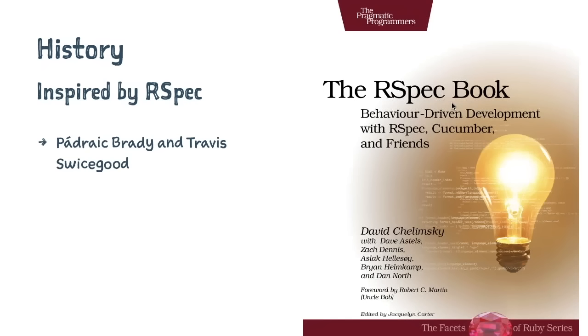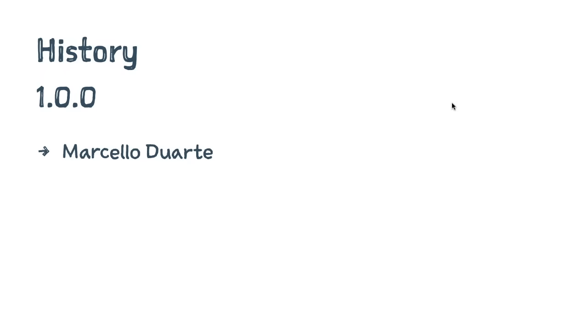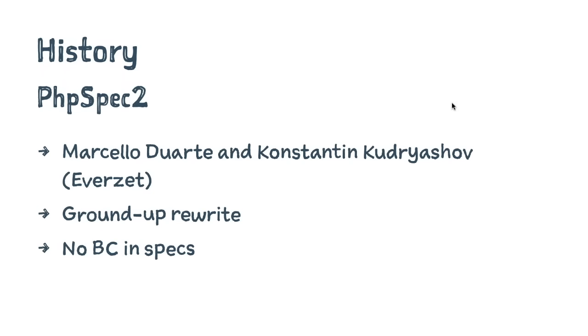The project was started by Pádraic and Travis — it never really got to 1.0 but gained some traction. It eventually got taken over by Marcello, who took it to a 1.0 release and made it really usable. Then a complete rewrite happened — Marcello and Constantine, who is behind Behat, were using PHPSpec and thought 'let's make it better.' They started a new repository from the ground up, and PHPSpec 2 was the start of the current project.